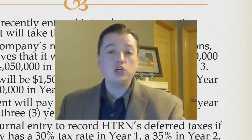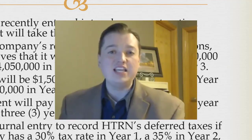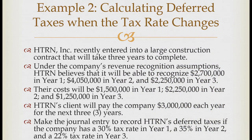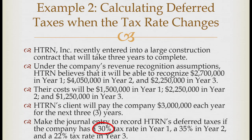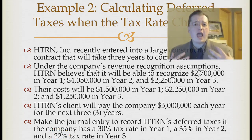We're going to jump right in — we've got a journal entry waiting. So let's look at HTRN Incorporated. They entered into a large construction contract expected to take three years. Under their revenue recognition assumptions, they'll recognize 2.7 million in year one, 4.05 million in year two, and 2.25 million in year three. Costs are 1.5 million, 2.25 million, and 1.25 million respectively. The client pays 3 million dollars each year. The tax rate is 30% in year one, 35% in year two, and 22% in year three.